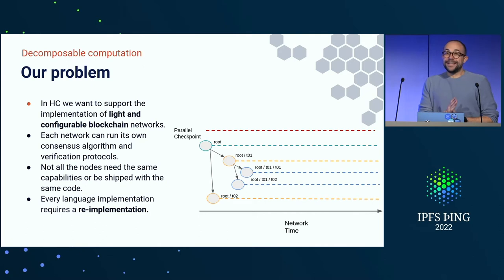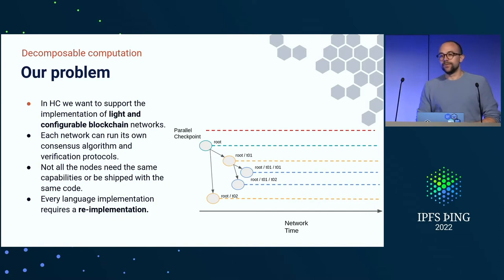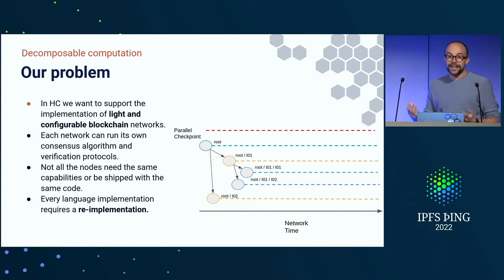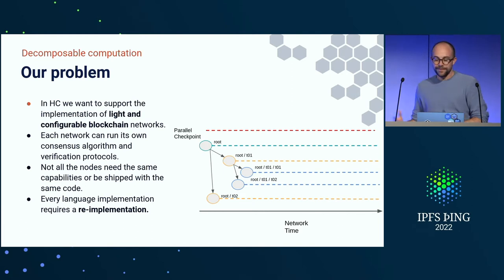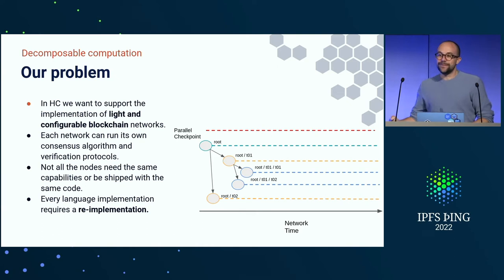The problem is that every time someone wants to implement a consensus — if we have different Filecoin clients, one written in Go, one written in Rust — they need to implement it in every single language, which means we end up with a single node. This can be applied to a lot of things like libp2p, where we end up rewriting DHT implementations — the one in Rust cannot be used in Go and may not even be interoperable.